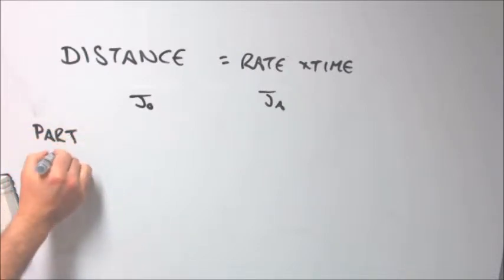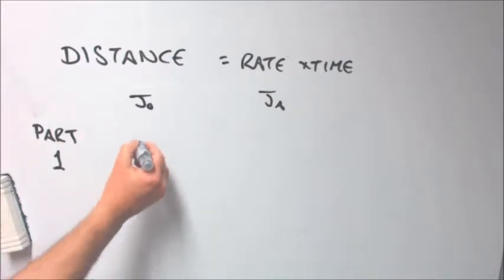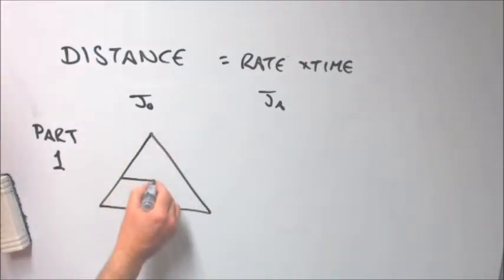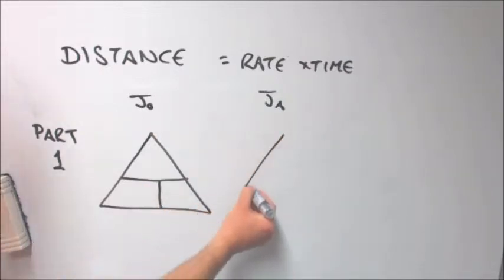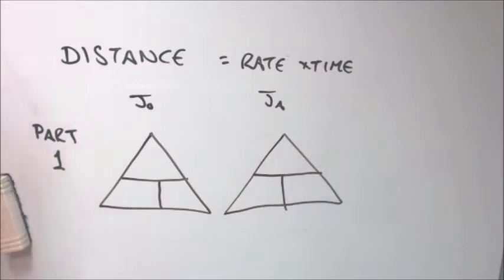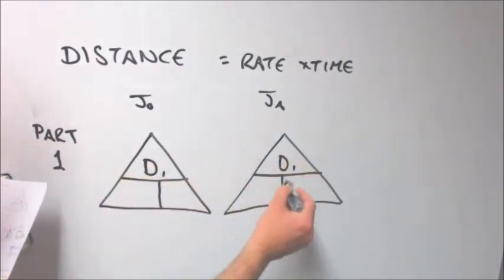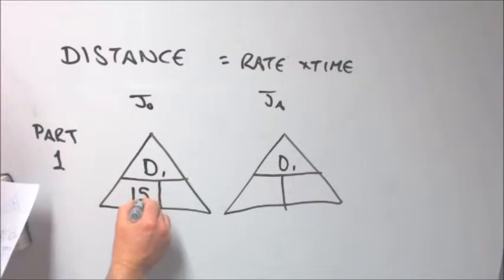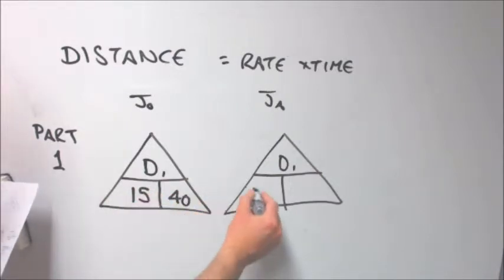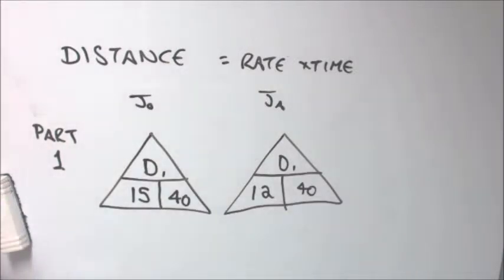So, John versus Jacob. They both are in part one. They both start at the same time. They have different rates. So let's get that information, first of all, put into some kind of table or some kind of equation. As I say, I prefer to use these dirt triangles. It's quite clear that John is traveling faster than Jacob.